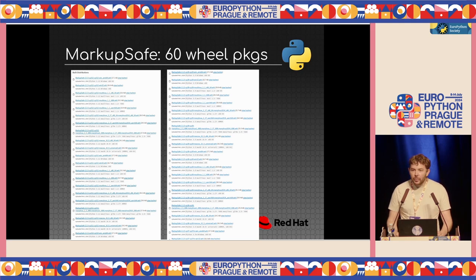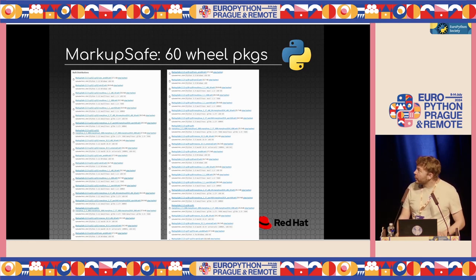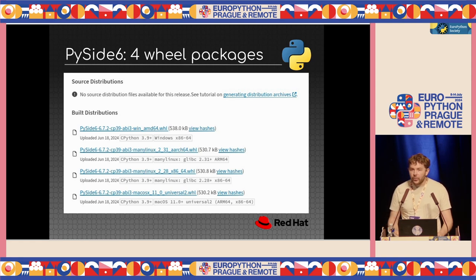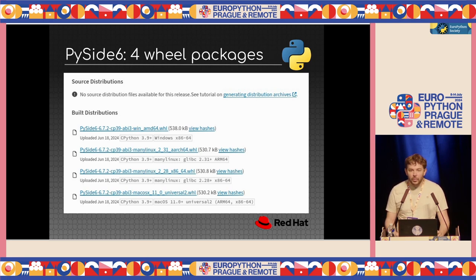To illustrate the number of packages, here's an example with MarkupSafe. MarkupSafe has 60 wheel packages — binary wheels for each Python version, each platform, each CPU architecture — quite a long list. Comparing that to PySide 6, which uses the stable ABI, there are only four wheel packages: one for Windows, one for Linux on Intel CPU, one for Linux on ARM CPU, and one for macOS. With only four files you cover all three main platforms.